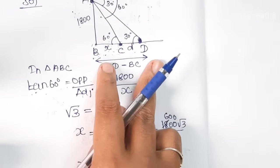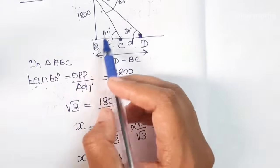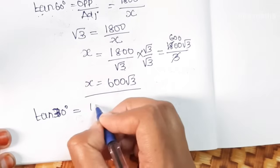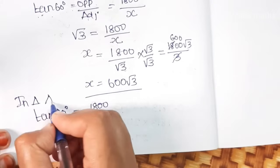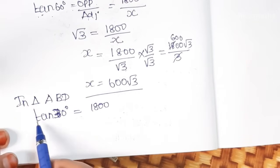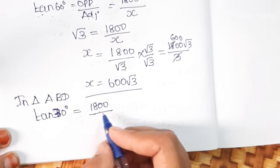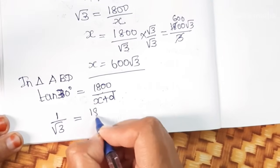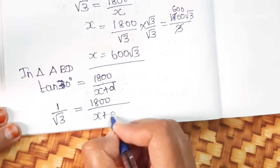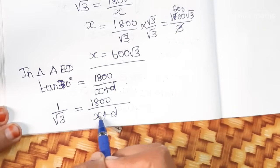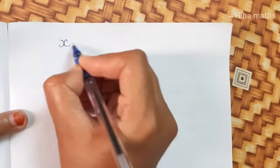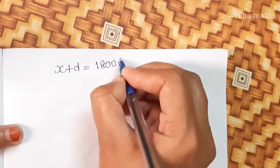Now let's do tan 30 degrees. In triangle ABD, tan 30 equals opposite side 1800 by the full distance x plus d. Tan 30 value is 1 by root 3 equals 1800 by x plus d. So x plus d equals 1800 root 3.